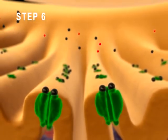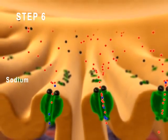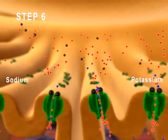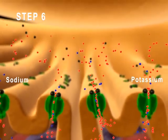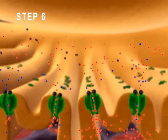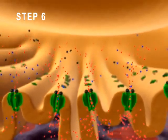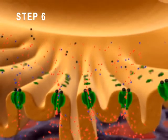Step 6. Sodium ions, shown here in red, enter the muscle fiber, and potassium ions, shown here in blue, exit the muscle fiber. The greater inward flux of sodium ions relative to the outward flux of potassium ions causes the membrane potential to become less negative.